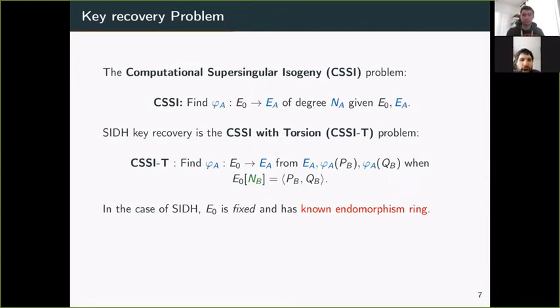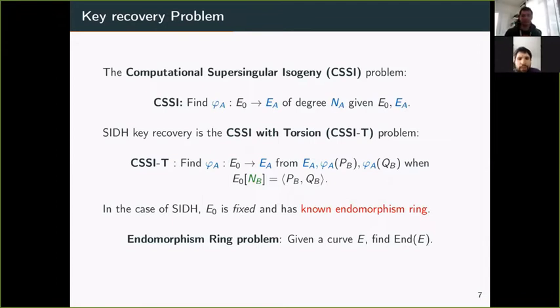Furthermore, in the case of SIDH, E₀ is fixed and has known endomorphism ring. Underlying all these problems is the most natural number theory problem: the endomorphism ring problem, where one is given a curve E and must find its endomorphism ring.